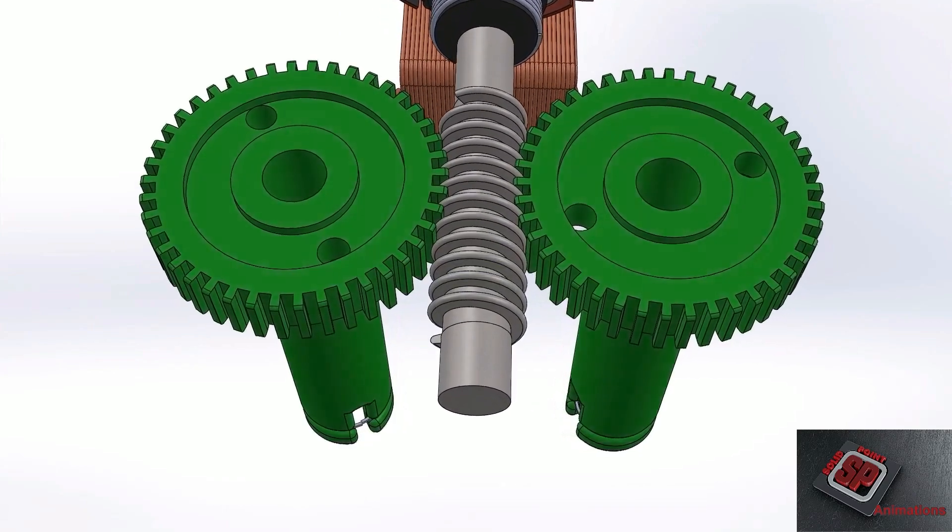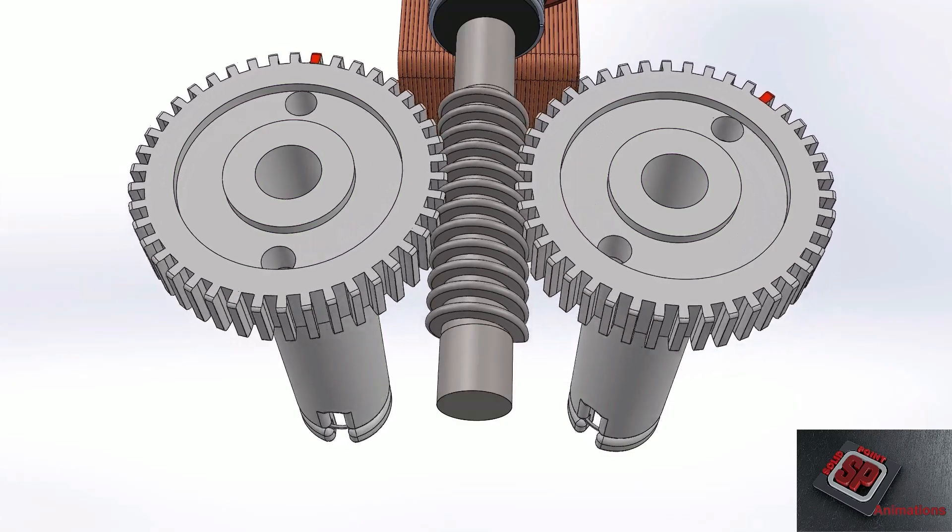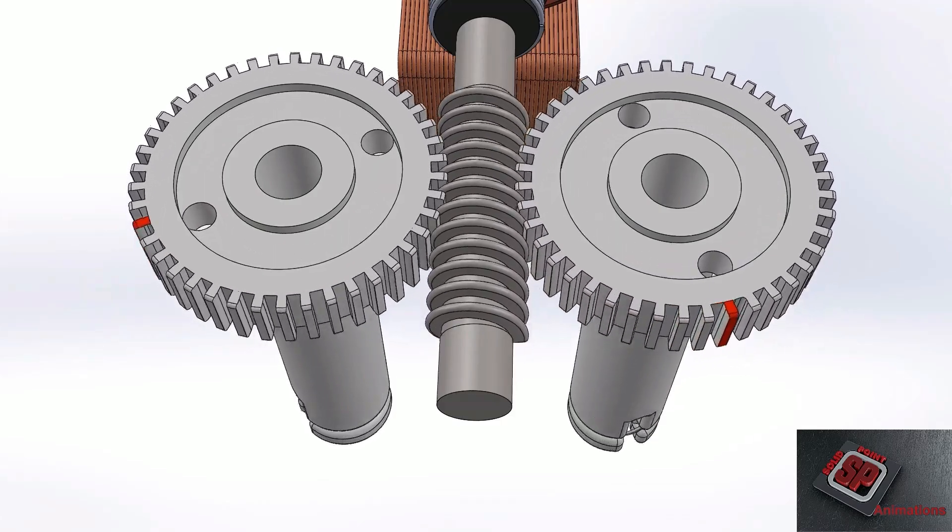The worm gear is essentially a stationary screw, so as it rotates it forces the pinion gears to spin in opposite directions to each other. This is why the beaters also spin opposite to each other, because they are directly attached to these pinion gears.